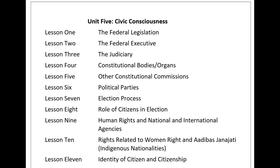Rights Related to Adibasi Janjati — Indigenous Nationalities: Nepal is a multilingual and multicultural country with 125 caste and ethnic groups. Among them, 59 castes are included in the list of Adibasi Janjati. They are backward in the vision of development; therefore, for their empowerment, they should have access to education, communication, health, and natural resources. The main issue of Adibasi Janjati is getting elementary level education in their mother tongue. Adibasi Janjati can be understood as a caste or community having their own mother tongue, traditions, cultural identity, social structure, and written or non-written history, as mentioned in Article 2, Chapter 1 of the National Foundation for Upliftment of Adibasi Janjati.